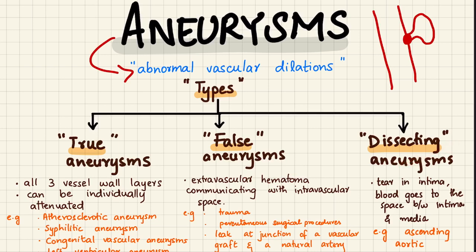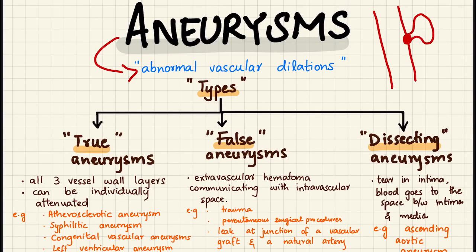In true aneurysms, the wall of the aneurysm has all three layers of a typical arterial wall, though these layers can be individually damaged or attenuated. An example is the atherosclerotic aneurysm, caused by weakening of the vessel wall media brought on by the inflammation of atherosclerosis, which is a chronic inflammatory and repair process. This inflammation eats up the vessel wall media, weakening it and making it prone to aneurysm formation.